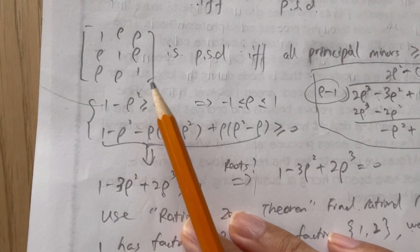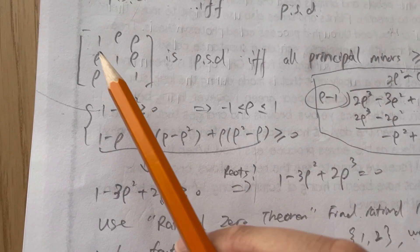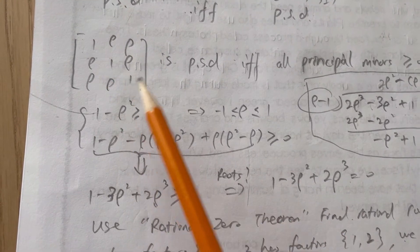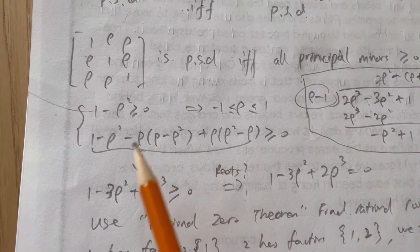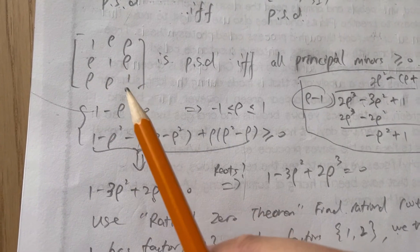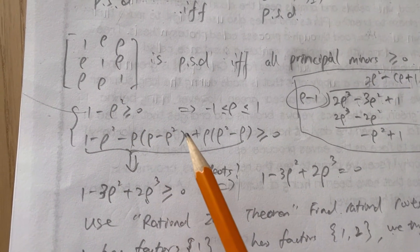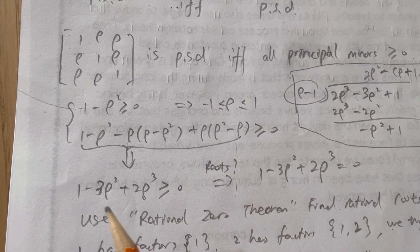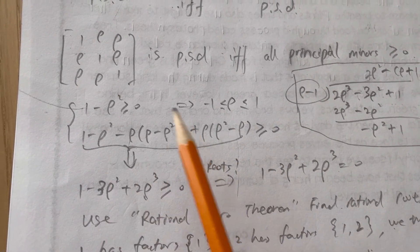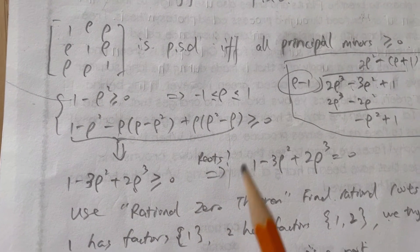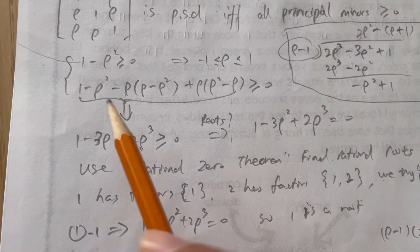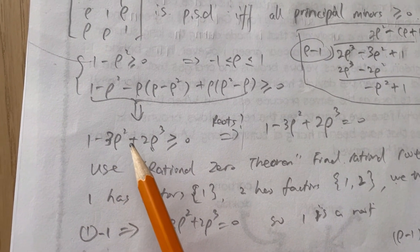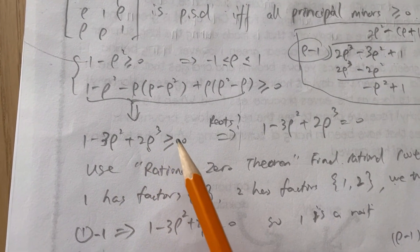This gives us two conditions. If we remove one row and one column, we get a 2x2 minor. If we remove nothing, we get the determinant of the full 3x3 matrix. If we remove two rows and columns, we just get 1. The first condition simplifies to rho being between -1 and 1 — nothing new. The useful condition is that the determinant of the full matrix must be greater than or equal to zero, which simplifies to the inequality: 1 minus 3*rho^2 plus 2*rho^3 >= 0.